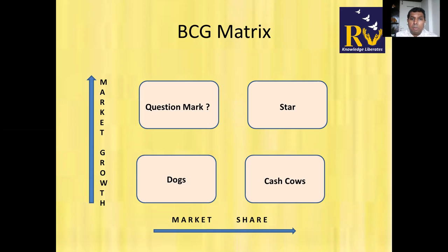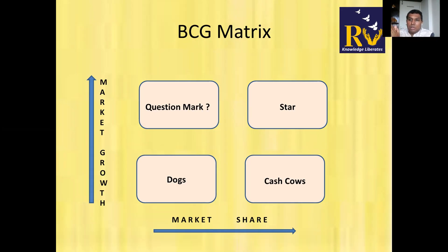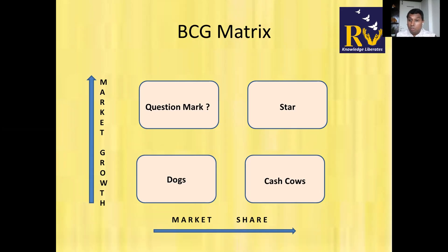The BCG Matrix is a two-dimensional matrix: one axis is your market share, and the other is whether the industry or market is growing. If the market is growing and you are entering it, you start as a Question Mark — you don't know if this product will succeed. It's primarily related to the introduction phase. If it booms, it moves to a Star; if it fails, it goes straight to Dogs, skipping growth and maturity.